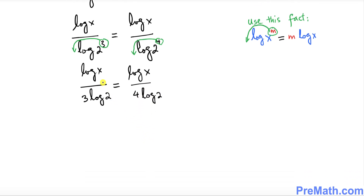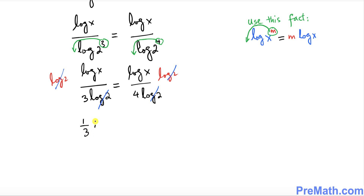Now we want to get rid of log of 2. I'm going to multiply both sides by log of 2. This log of 2 and log of 2 cancel, and we simply end up with 1 over 3 times log of x equals 1 over 4 times log of x.